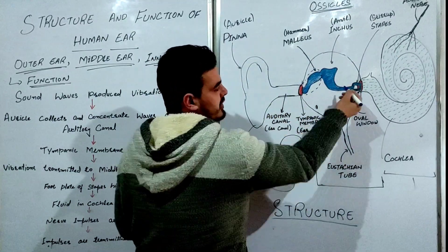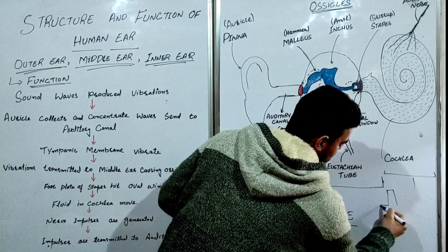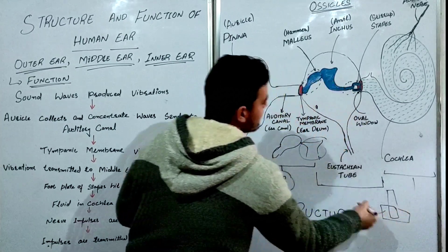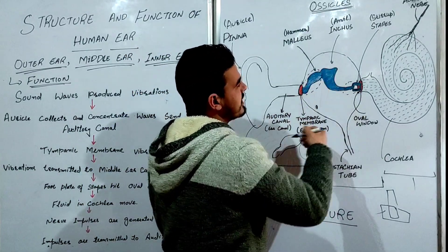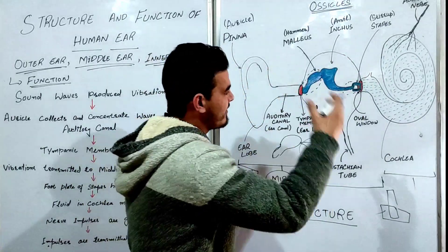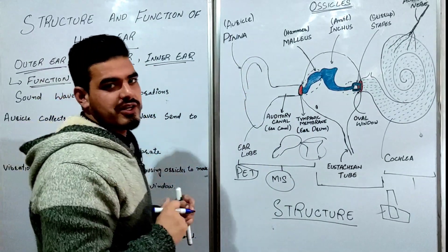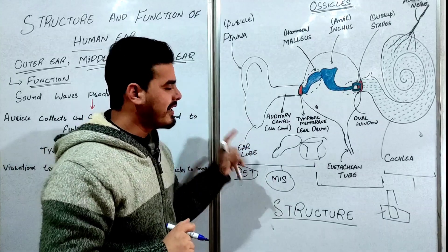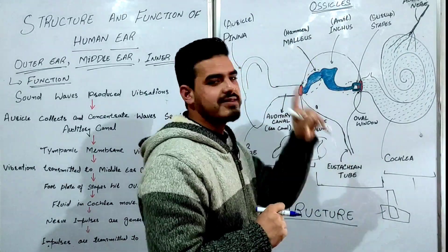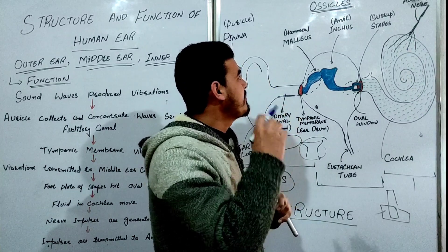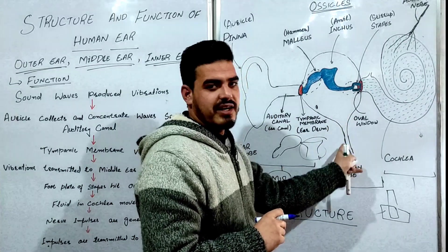The incus is called the anvil, and the last bone is the stapes, which has a stirrup-like shape. Another mnemonic to remember their shapes is HAS: H for Hammer (malleus), A for Anvil (incus), and S for Stirrup/Stapes. So the middle ear mnemonic is MISS Middle Ear — Malleus, Incus, Stapes — or HAS: Hammer, Anvil, Stapes.